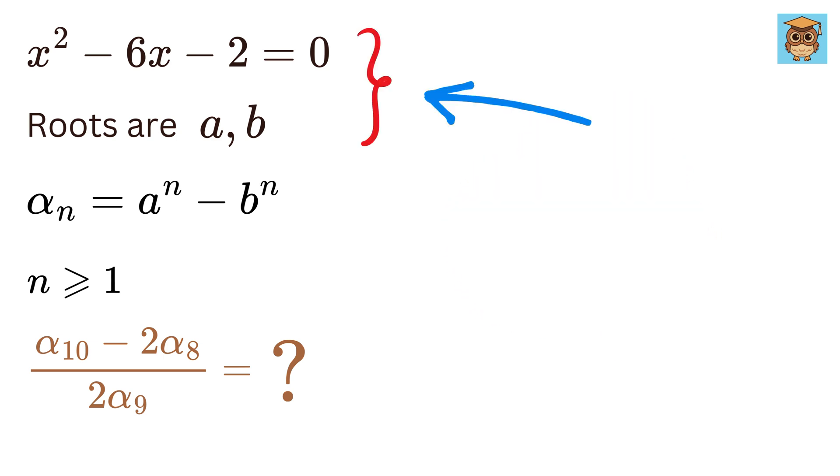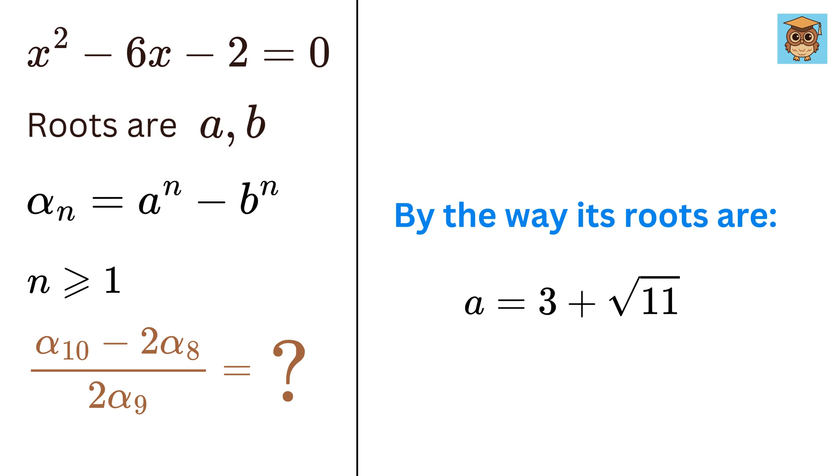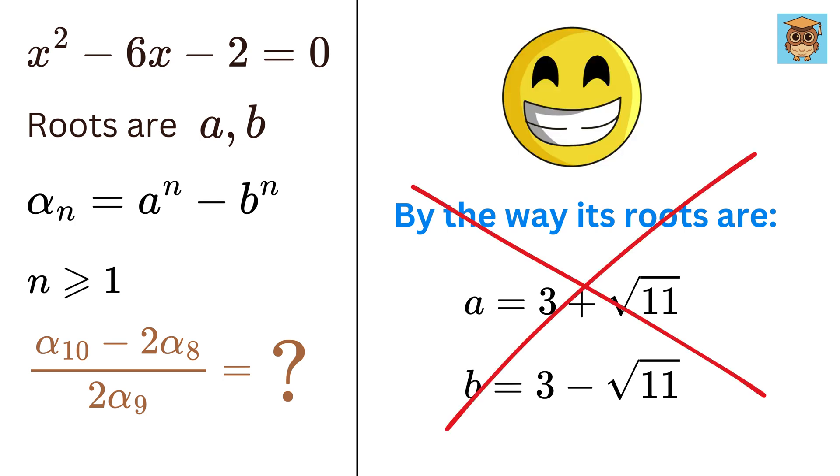Now this is a quadratic equation whose roots are a and b. You might think that we will have to find the roots of this equation and proceed further by finding its eighth, ninth, and tenth power, and then subtract and divide them, but that will just complicate things because its roots are crazy as it involves square roots. Fortunately, to our surprise, we won't need it, and you will see why.